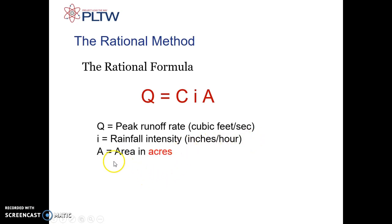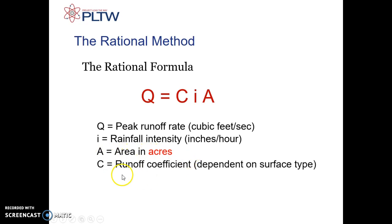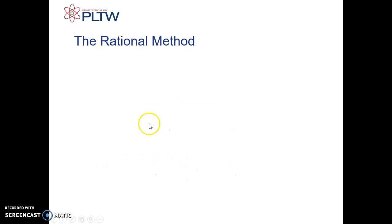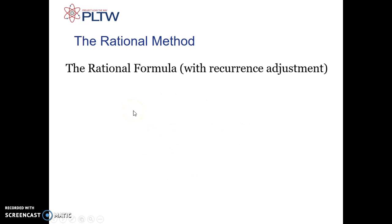I'll show you one of those charts. C is the runoff coefficient, which depends on surface type, and that also comes from a chart included in your formula page. You're going to need to get your formula packet out so you know how to use this.